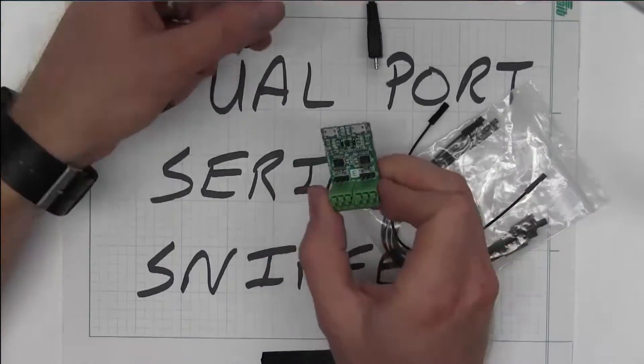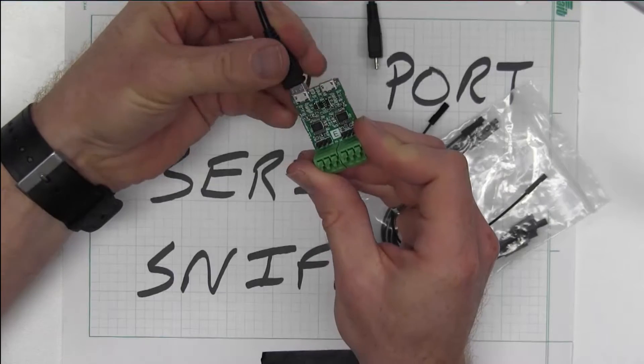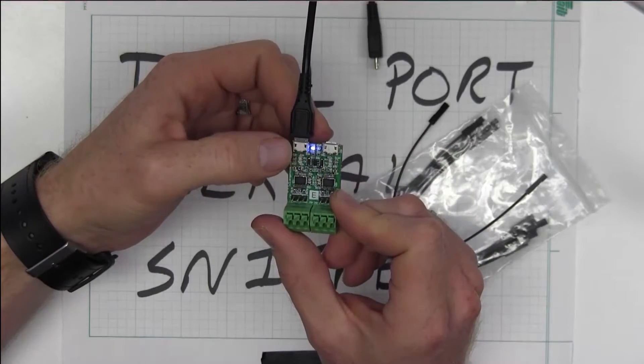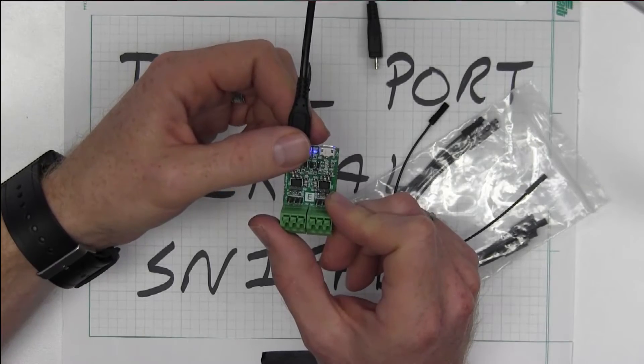So let's check this out really quickly. Very simple to use. Plug in your cable. You've got a blue LED, which is my favorite power indicator, so you know your serial port is actually active.